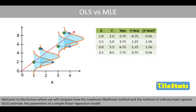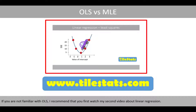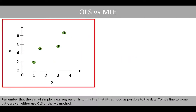Welcome to this lecture where we compare how the maximum likelihood method and the method of ordinary least squares estimate the parameters of a simple linear regression model. If you are not familiar with ordinary least squares, I recommend that you first watch my second video about linear regression. Remember that the aim of simple linear regression is to fit a line that fits as good as possible to the data. To fit the line to some data, we can either use ordinary least squares or the maximum likelihood method.